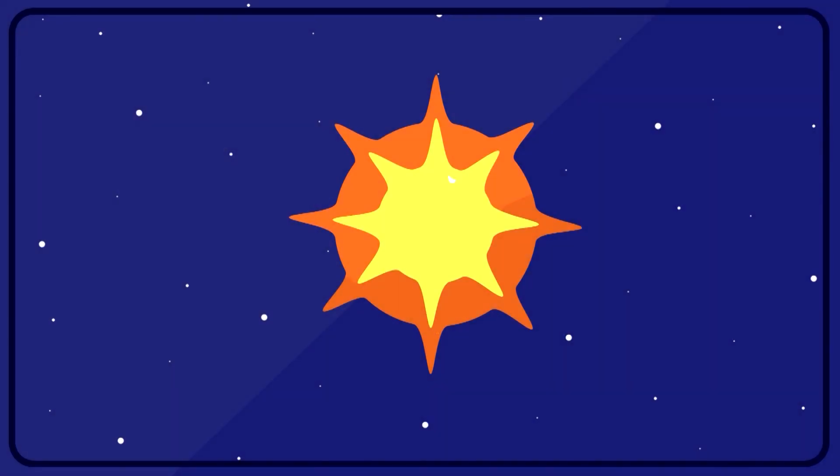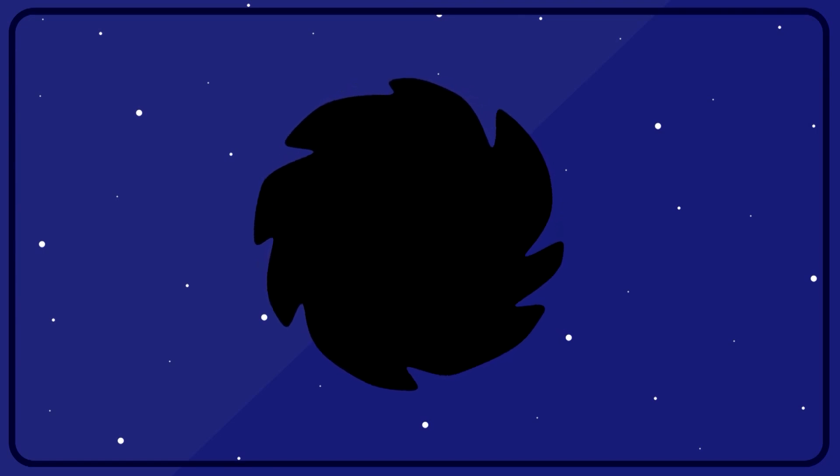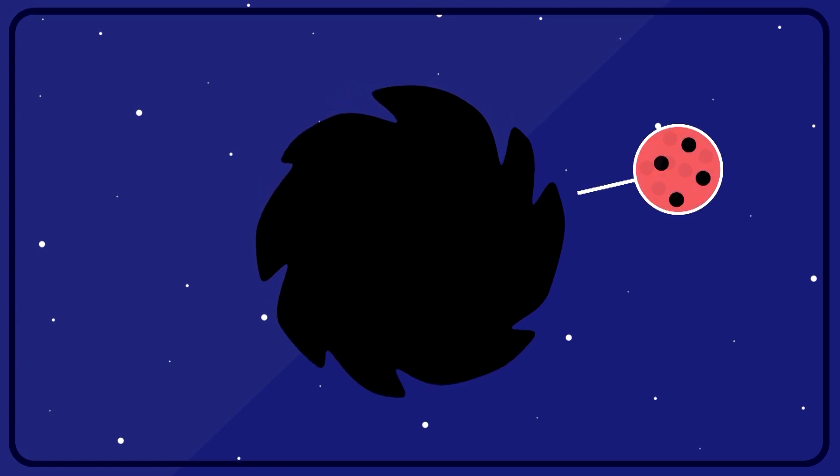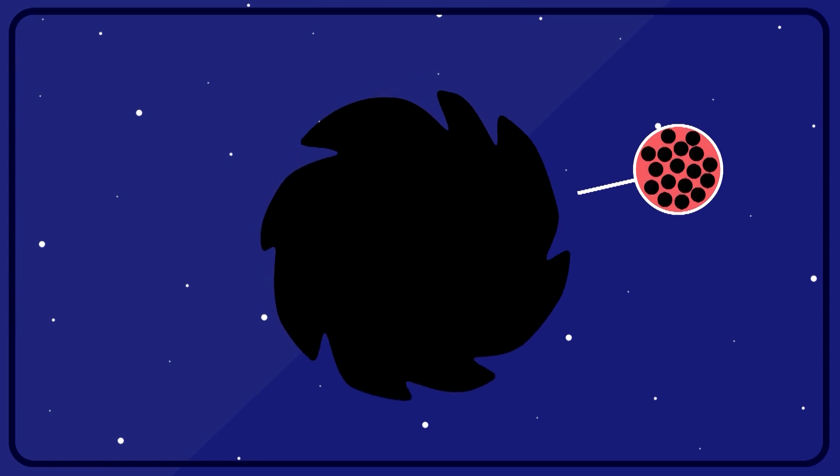A black hole is formed at the end of a big enough star's life when the core collapses in on itself in what's called a supernova. In this stage, matter is compressed so densely that not even light can escape the gravitational pull.